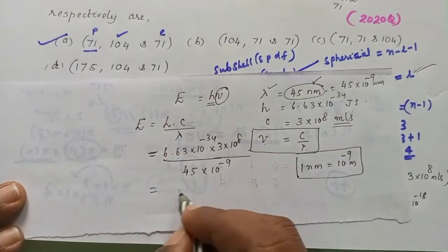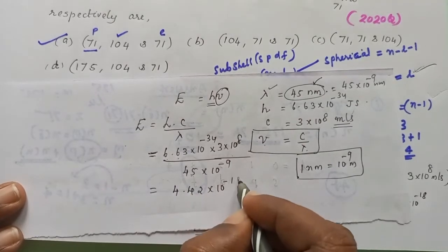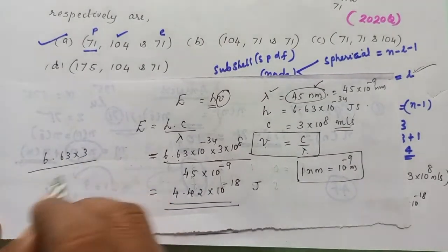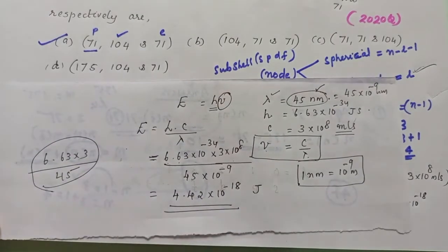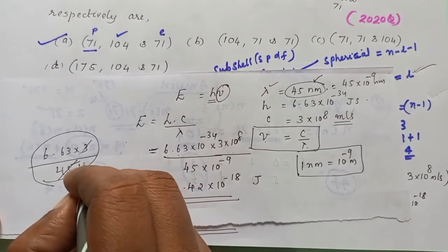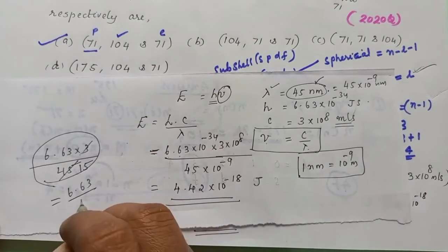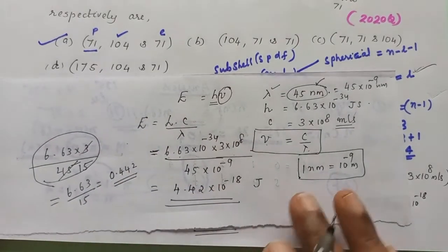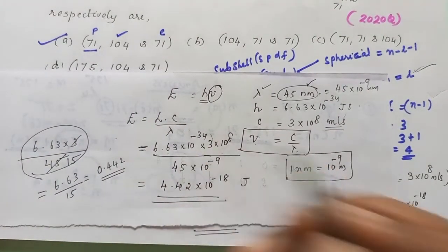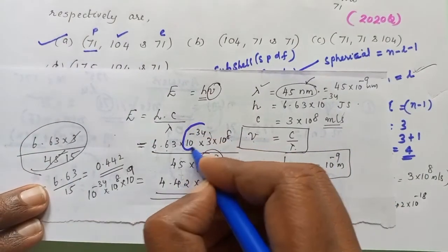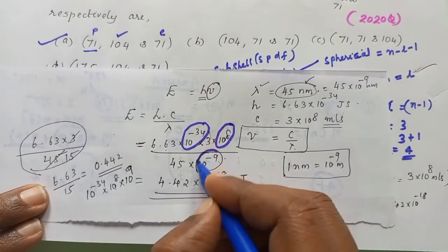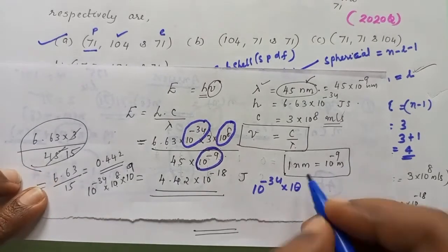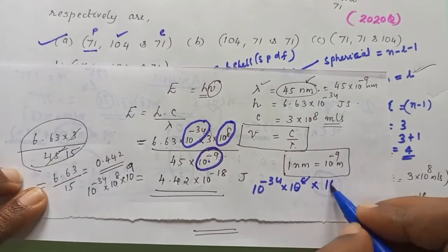By calculating these terms we get 4.42 into 10 raised to minus 18 joule. The numerical part: 6.63 into 3 divided by 45 — first, 6.63 into 3 equals approximately 19.89, and 19.89 divided by 45 equals 0.442. For the powers of 10: 10 raised to minus 34 into 10 raised to 8 divided by 10 raised to minus 9, which gives 10 raised to minus 17, so the final answer is 4.42 into 10 raised to minus 18 joule.